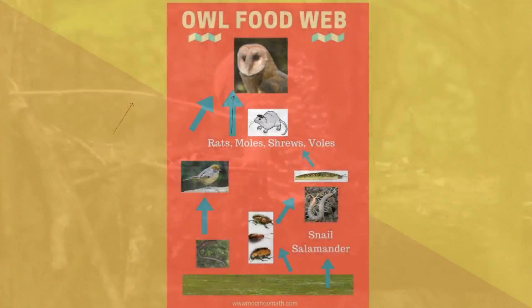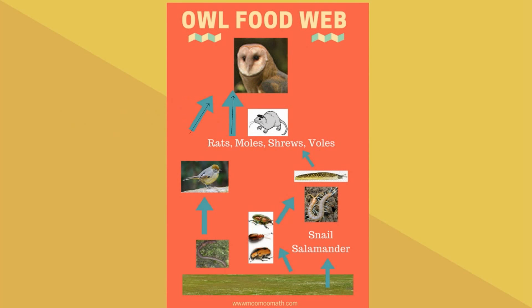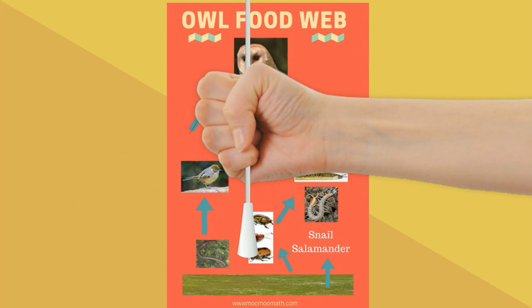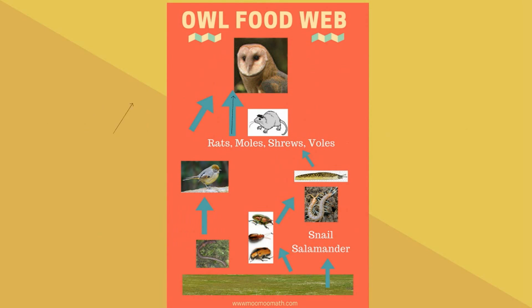Let's begin with the food web. The owl likes to eat rats, moles, shrews, and voles. The owl will also occasionally eat small birds. Notice that the arrows are pointing towards the owl because their energy is being transferred to the owl.